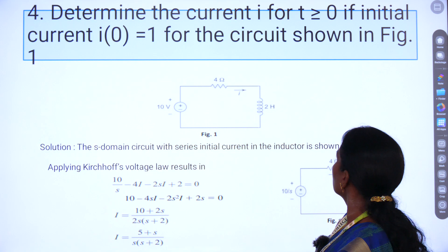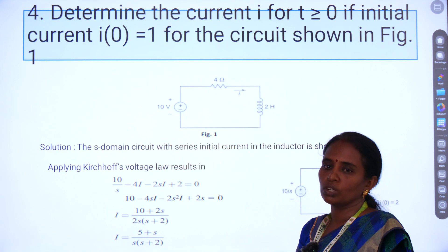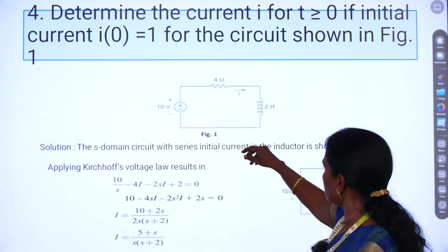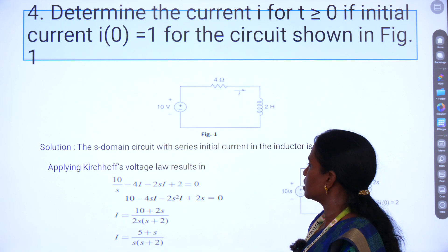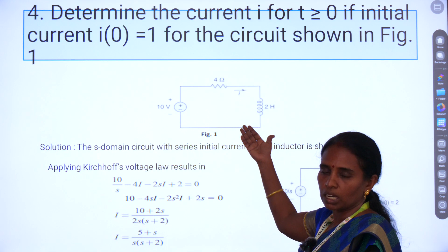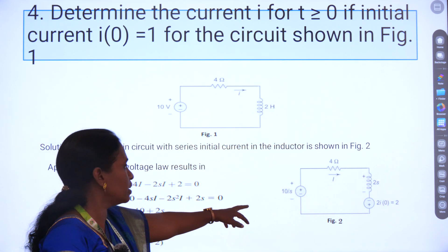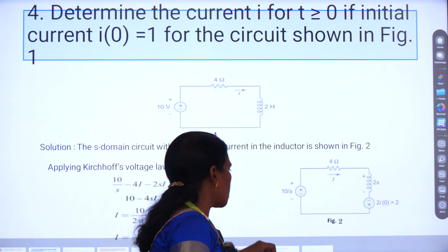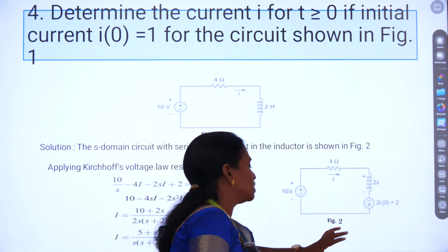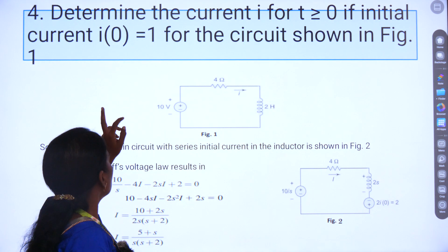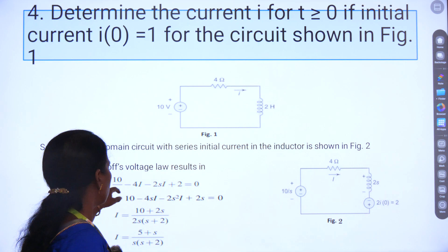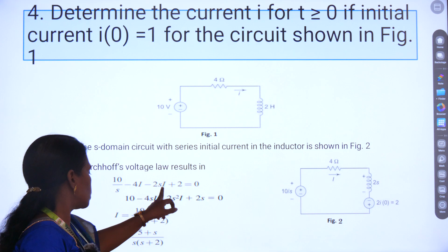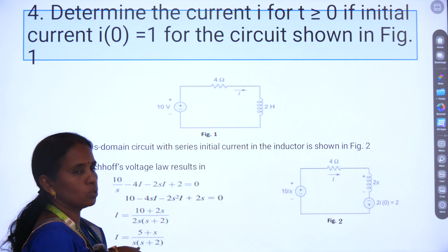Here is one more problem: determine the current for t ≥ 0, given that the initial condition I(0) = 1. The given circuit has a 10V source, 4 ohms resistor, and a 2H inductor. We convert this to the S domain: 10/S, 4 ohms, and 2S. The inductor initial condition gives a term ±2·I(0) = 2. Applying KVL: 10/S − 4I − 2SI + 2 = 0. After simplification, I = (S + 5) / [S(S + 2)].